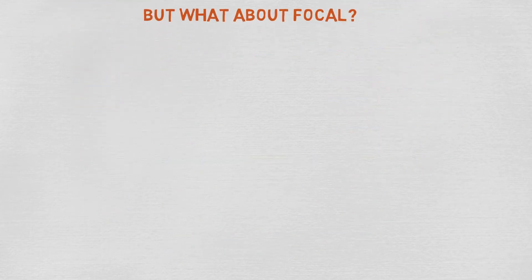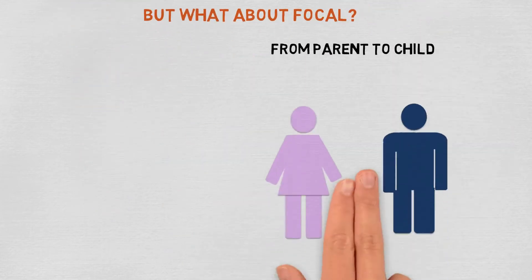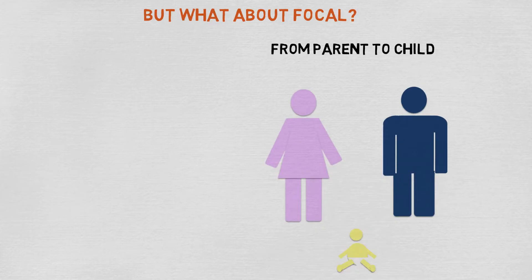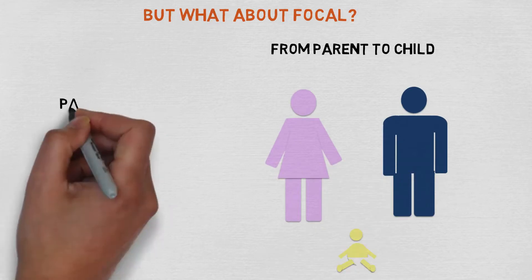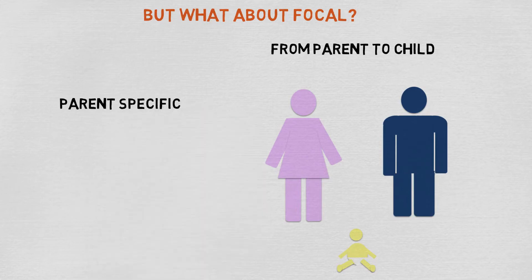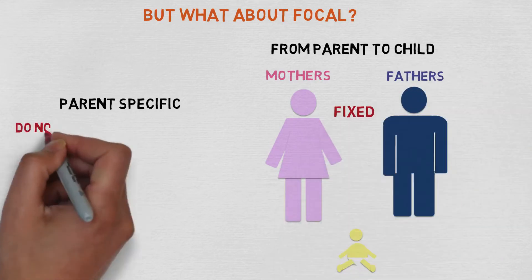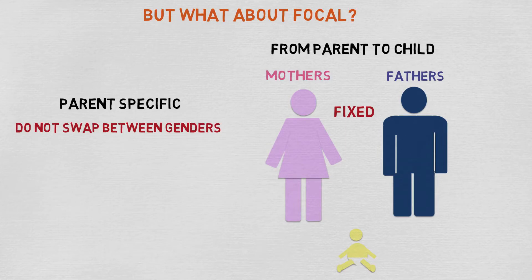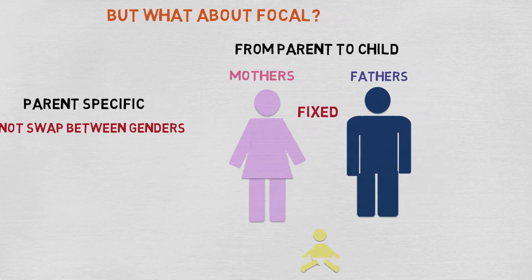In addition, the way in which the two forms are passed from parent to child also differs. Unlike the diffuse form, the inheritance of focal CHI is parent specific. This means that in each case of focal CHI, mothers and fathers play specific roles. These roles are fixed and do not swap between genders. The inheritance of focal CHI occurs in two distinct events.